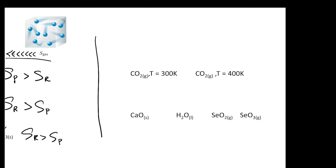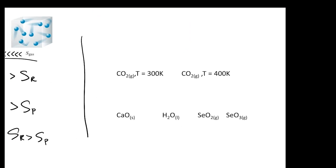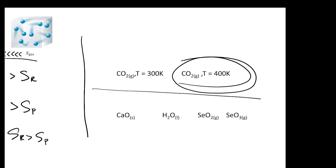Another thing you'll encounter: if you're given a species at two different temperatures and asked which gives a larger entropy, it will be the one at the higher temperature. The higher temperature gives a larger entropy — specifically a larger TΔS term.